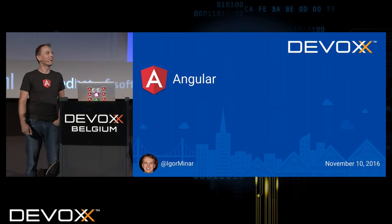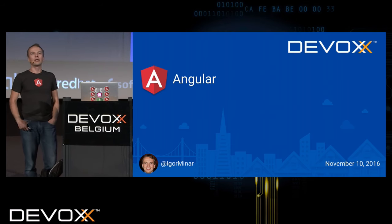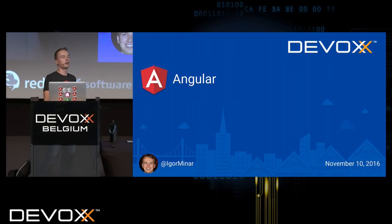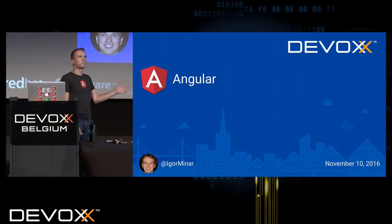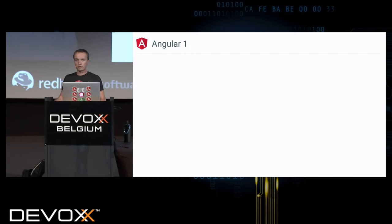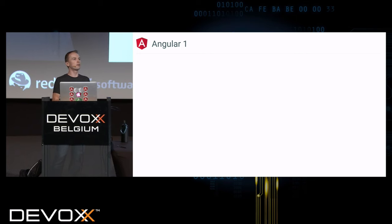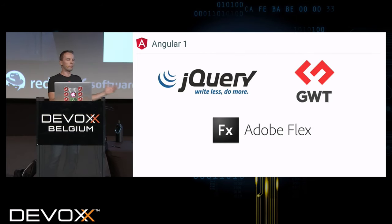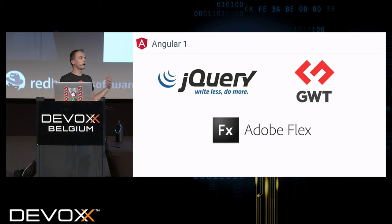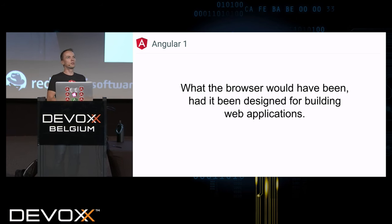In order to talk about Angular 2, it's important that we start with Angular 1. I've been on the project from the very beginning. Angular 1 started around 2009-2010. Angular 1 was built for a different kind of web than we have today. Back then, we were building mostly jQuery applications, some GWT, Adobe Flex — debating thin client versus thick client. Angular decided to change the way we look at the browser, making it something built for client-side web applications.